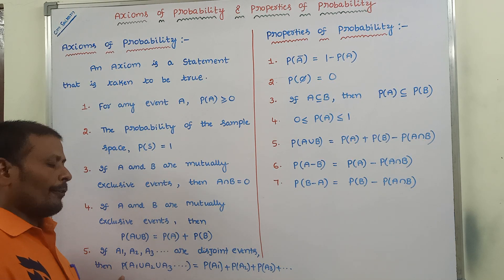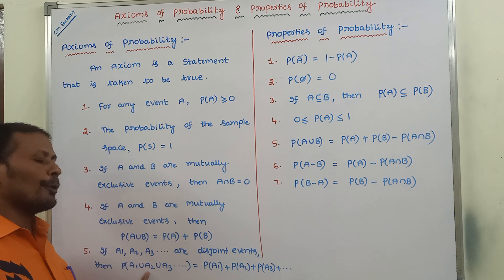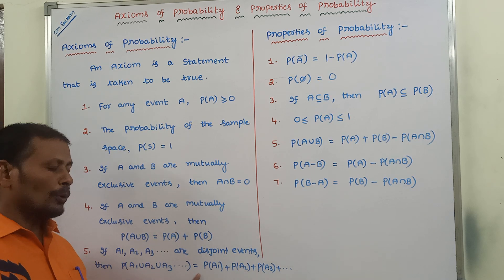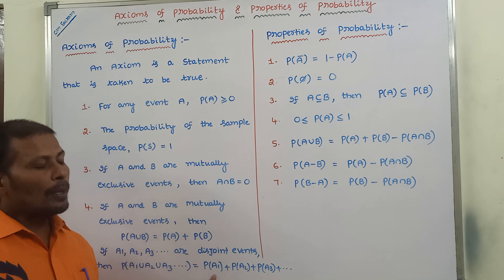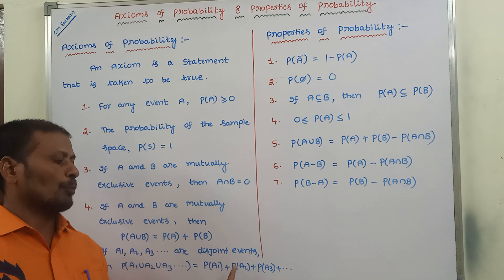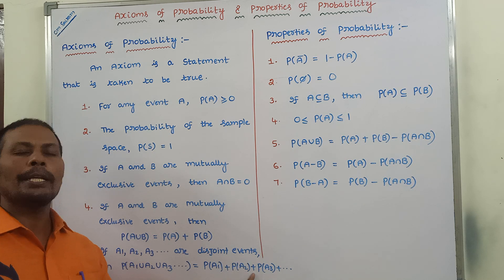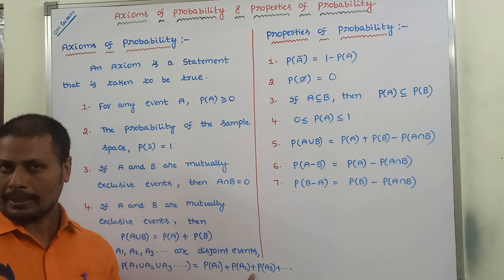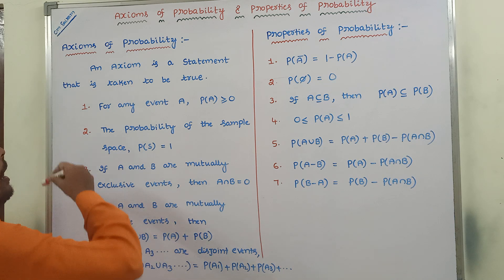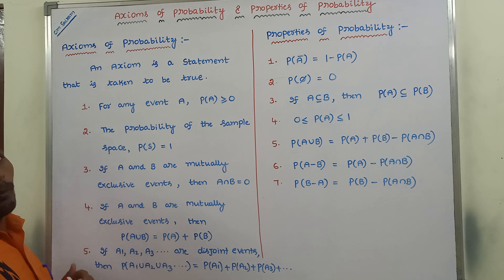Then P of A1 union A2 union A3 is equal to P of A1 plus P of A2 plus P of A3. So these are the axioms of probability.